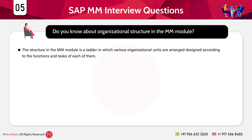The next question is: do you know about the organizational structure in the MM module? The structure is a ladder in which organizational units are arranged by functions and tasks. The first unit is the client, which is independent with its own record system and table sets. The second is the company code, a smaller unit for which a self-reliant account set can be made for external reports. The third is the plant, where supplies are formed and goods and services are given — it can be broken into sub-plants for maintenance, production, procurement, etc.